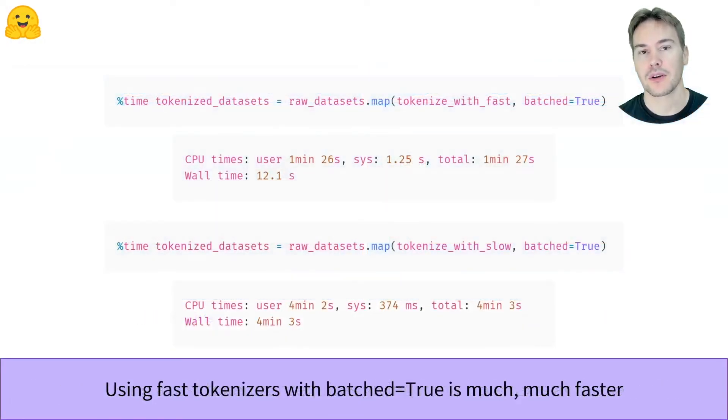Now those are impressive results. The fast tokenizer takes 12 seconds to process a dataset that takes 4 minutes to the slow tokenizer.